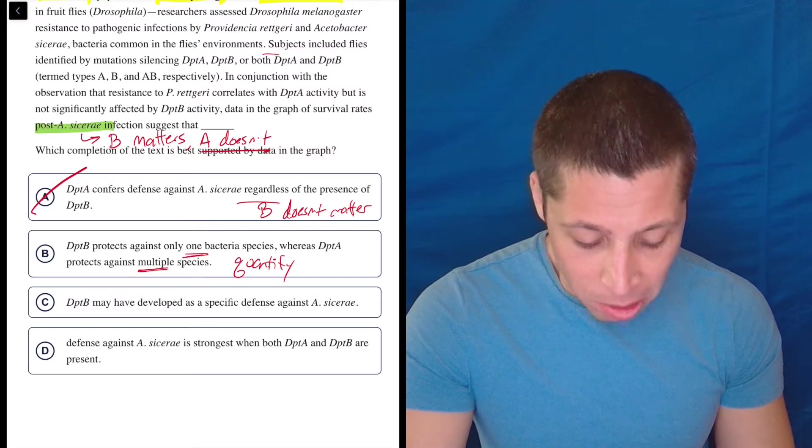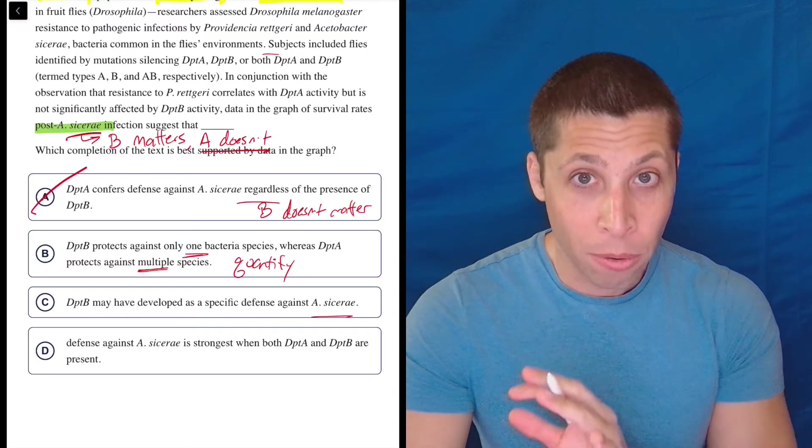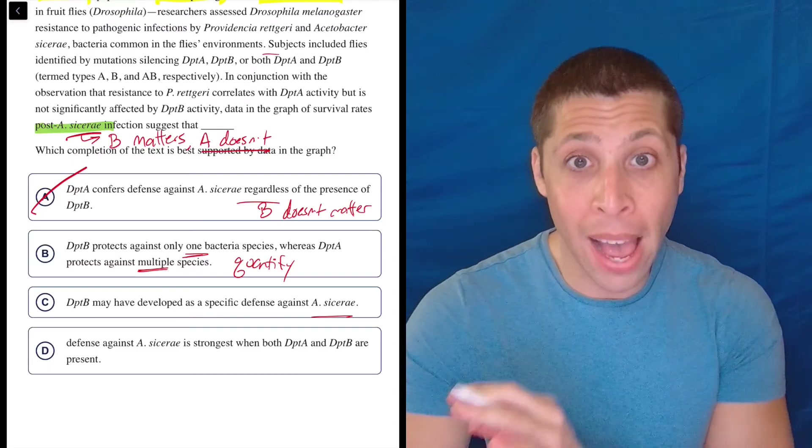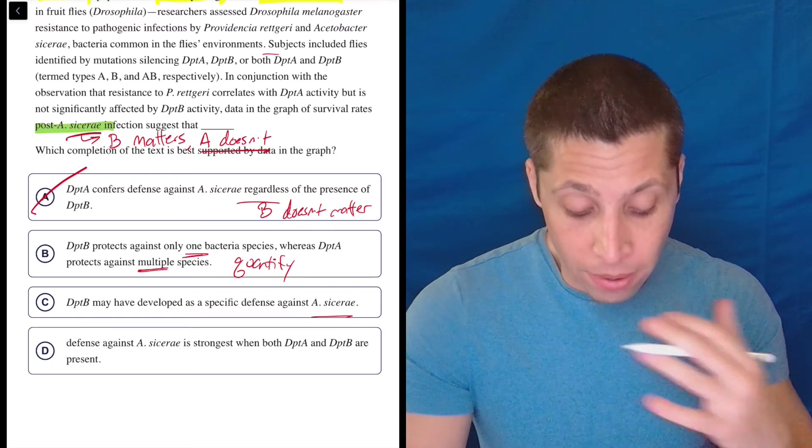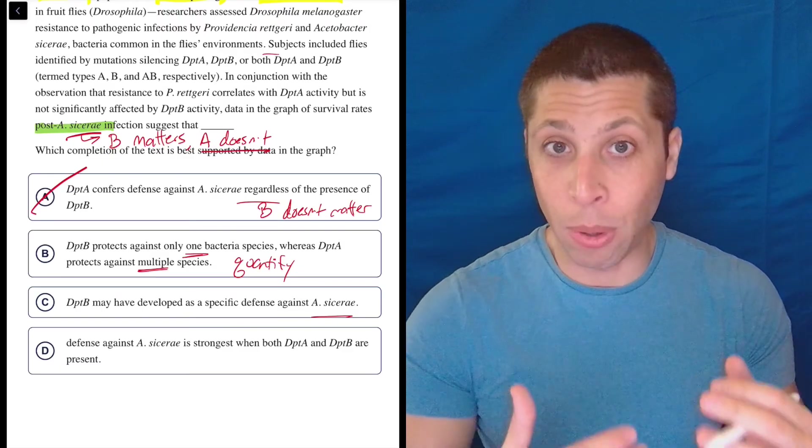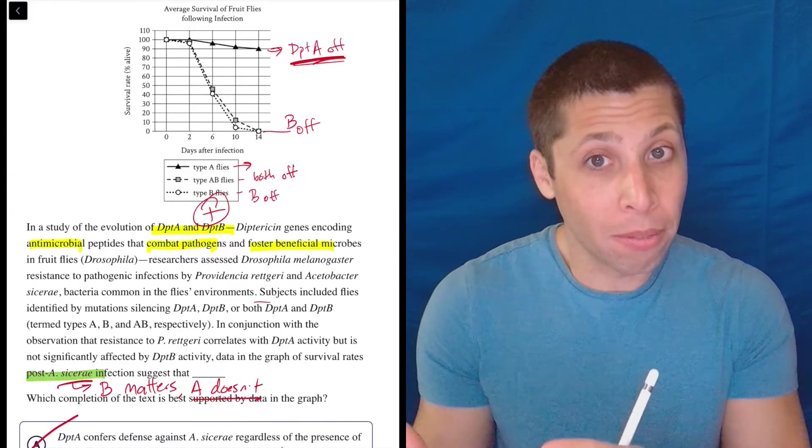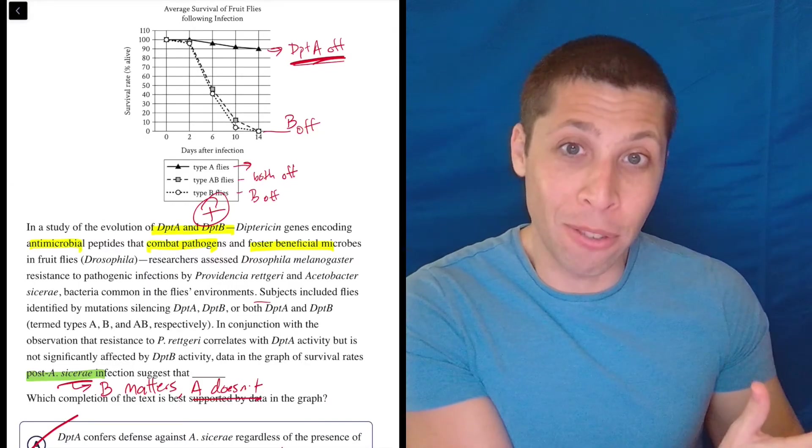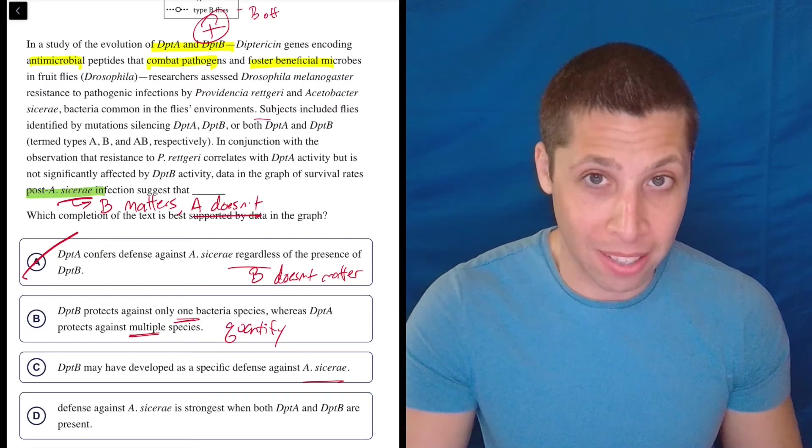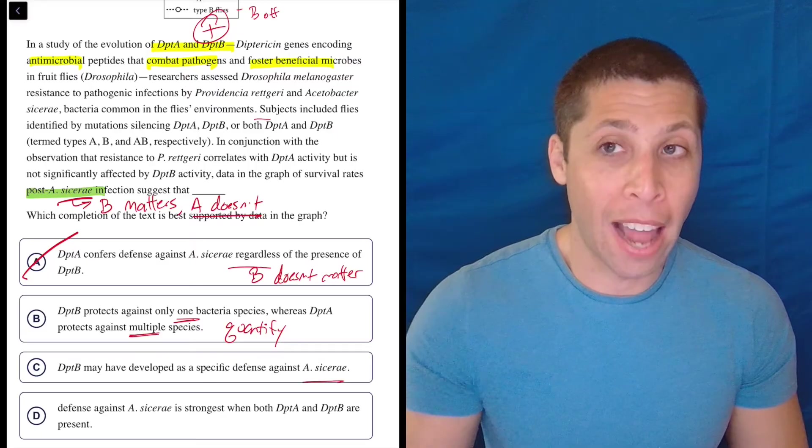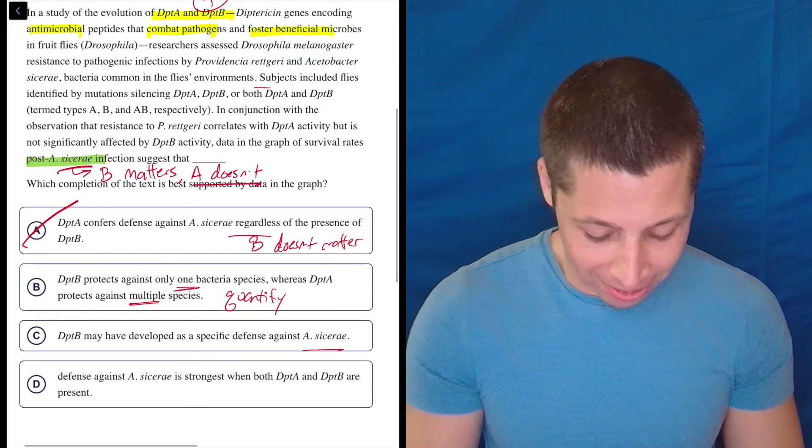I'd leave it in because I'm not really aware of what's going on, but I'm nervous about that choice. This is that idea of placing a smart bet. I would not bet on choice B because it has some things that make me nervous. C: DptB may have developed as a specific defense against A. sicerae. So that's the thing we were just doing, right? So if we said before that B matters, right, then maybe the DptB, which is the B, did develop to protect against this thing because if we turn it off, then they all die. So maybe the whole point of B is that it saves you from the sicerae thing. And so maybe it is true that it developed as a specific defense against that because it is protecting those flies. And if we turn off the B, the flies die. So that is a promising answer.